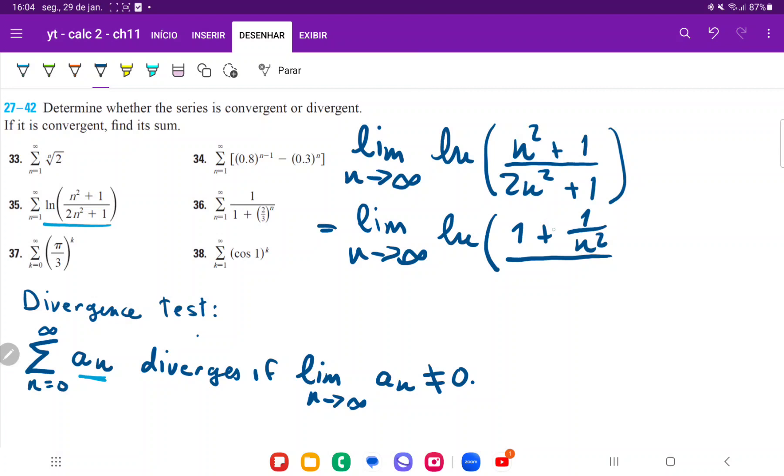And then 2n squared divided by n squared is going to be 2, and then plus 1 divided by n squared, which is going to be 1 over n squared.